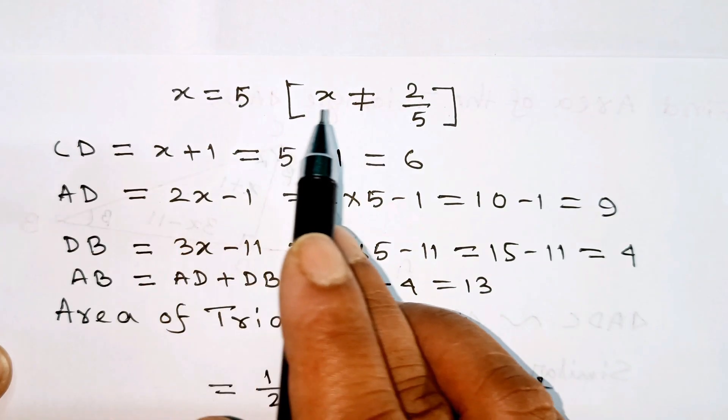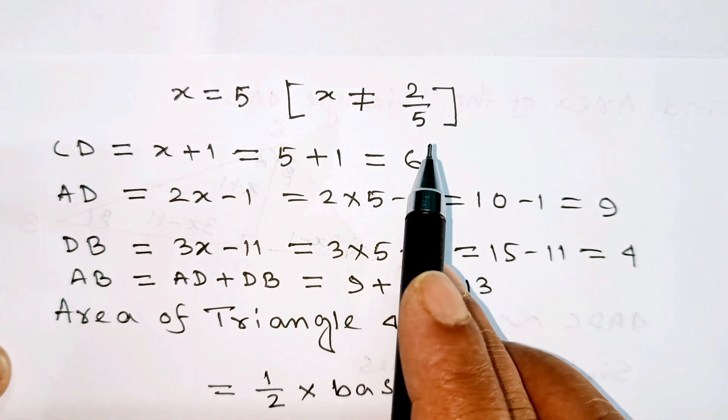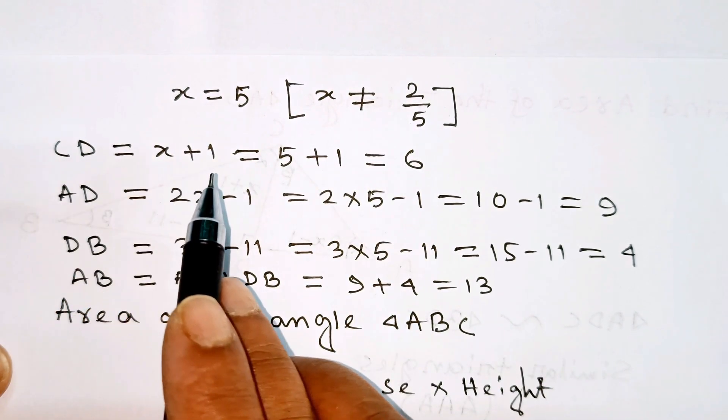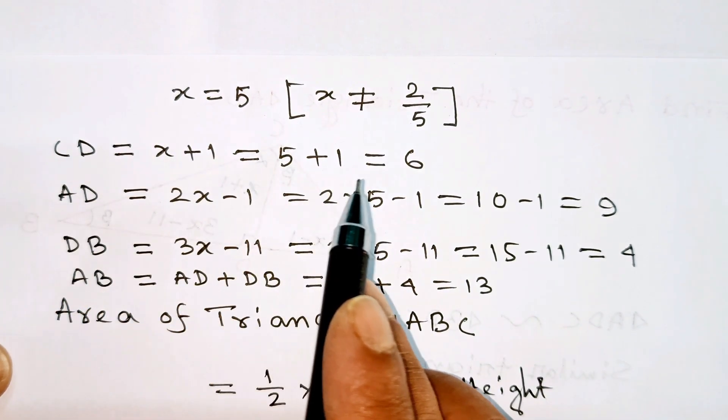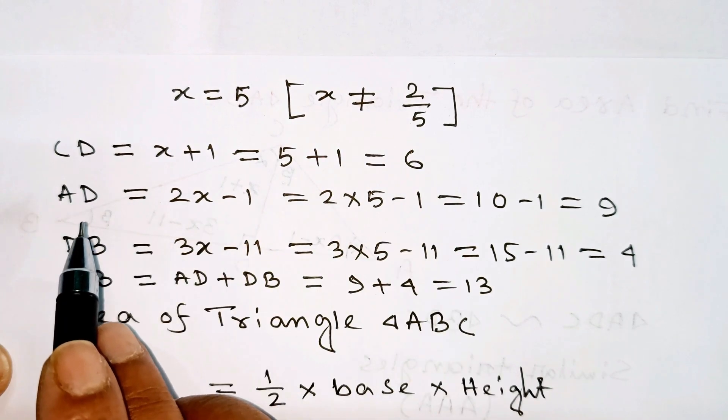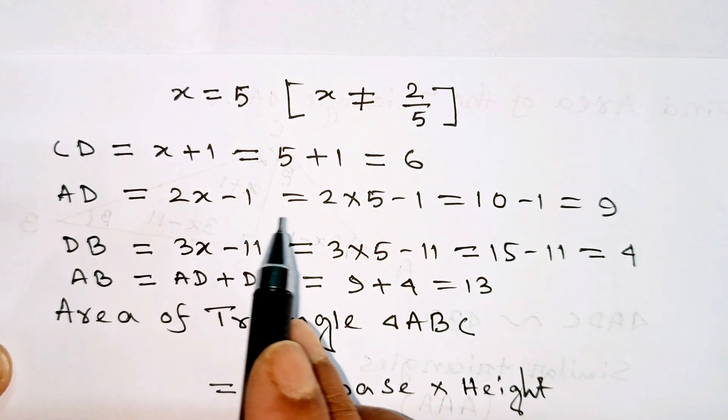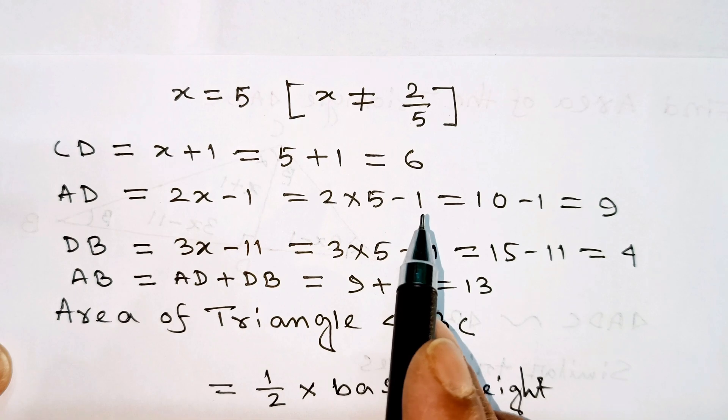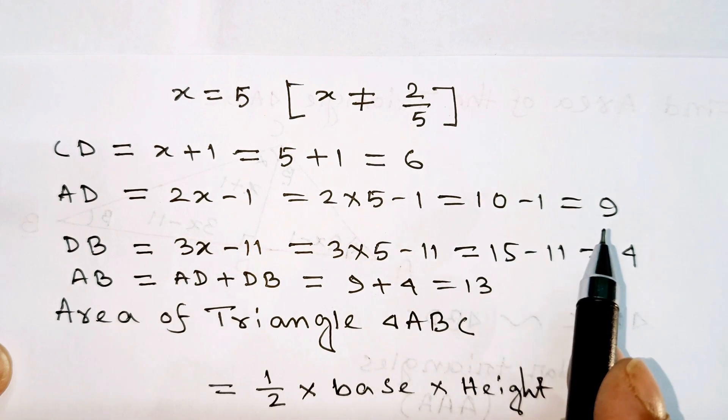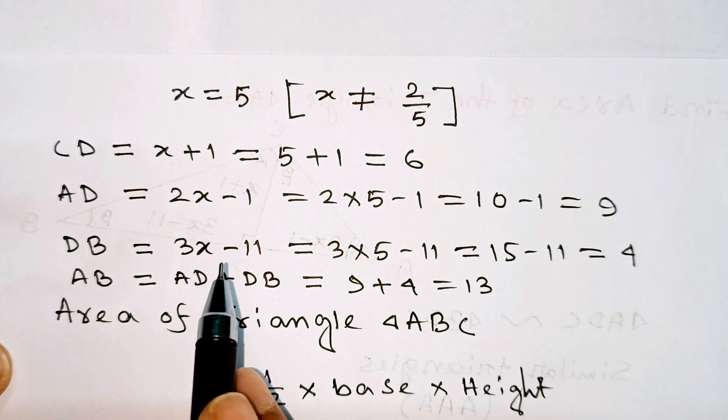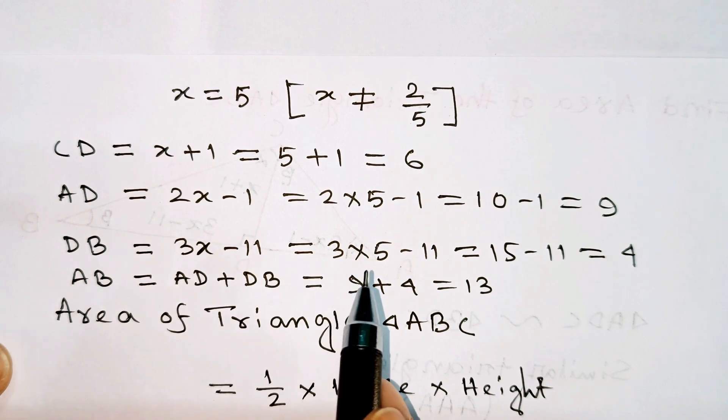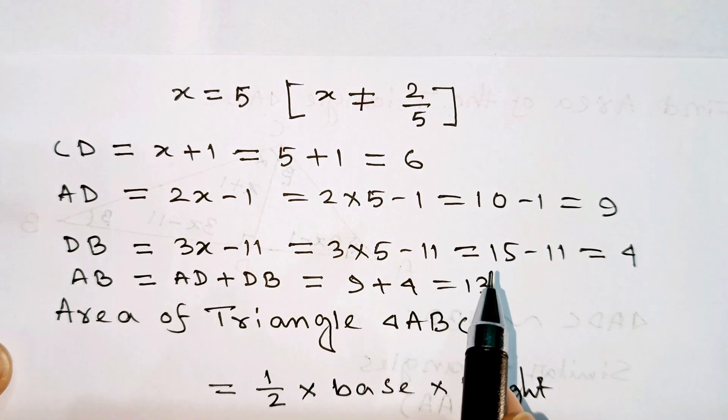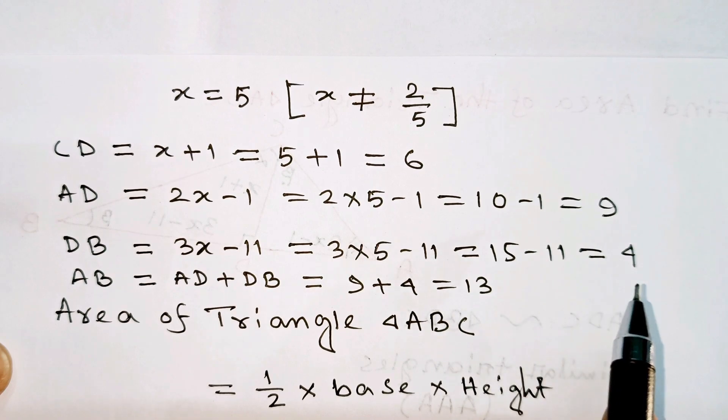Therefore x equals 5. Now CD equals x plus 1 equals 5 plus 1 equals 6. AD equals 2x minus 1 equals 2 times 5 minus 1 equals 9. DB equals 3x minus 11 equals 3 times 5 minus 11 equals 4.